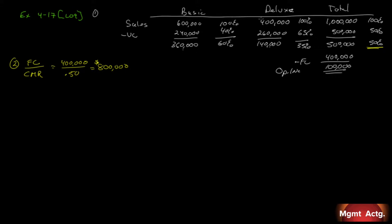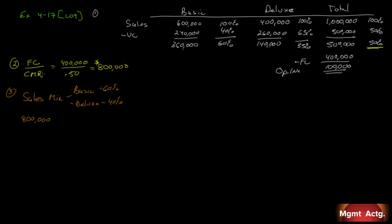Number three: compute the overall break-even point in units based on the current sales mix. In units, we need to know how many units of basic and how many units of deluxe. We know $800,000, but how many units is that? Basic is $600,000 of $1,000,000, which is 60%, and deluxe is 40%. So $800,000 times 0.6 equals $480,000 from basic, and $800,000 times 0.4 equals $320,000 from deluxe.